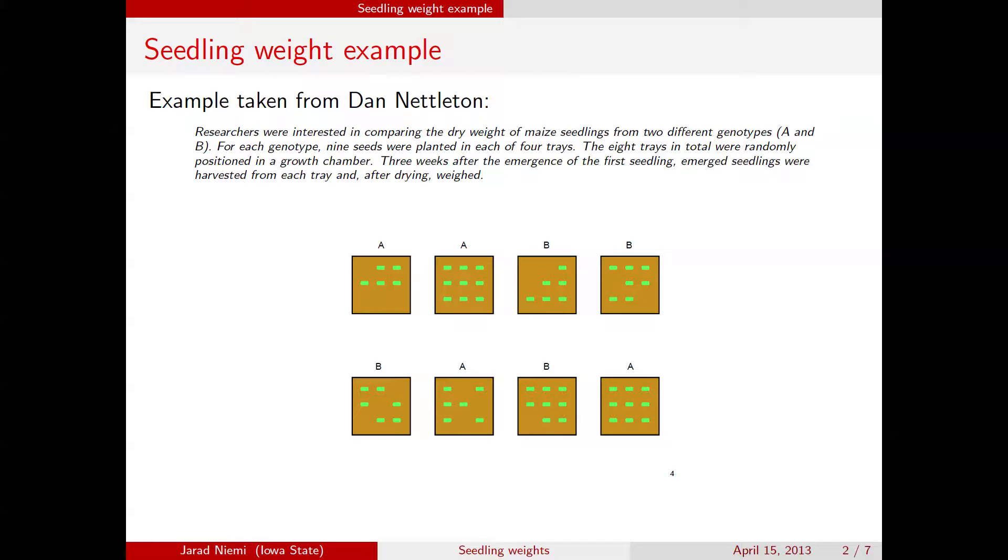So we have an issue here of some missing data, that is, those seeds that never turned into seedlings. But for the purpose of this discussion, we're going to assume that that missing data mechanism is ignorable. The primary question of interest then is the seedling weights of the two species, or in particular the difference in their weights for the two species.